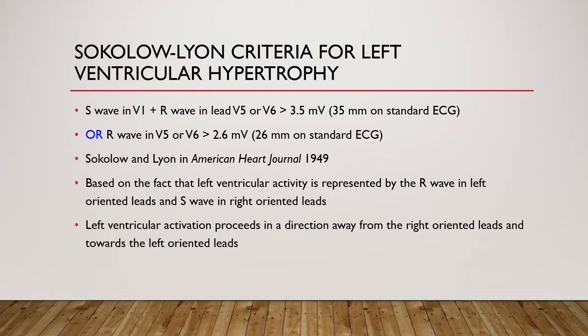Sokolov and Lyon published the criteria for left ventricular hypertrophy in the American Heart Journal in 1949. The S wave in V1 plus R wave in V5 or V6 together should constitute more than 3.5 mV or 35 mm on a standard ECG, or the R wave in V5 or V6 should be more than 2.6 mV or 26 mm on a standard ECG.